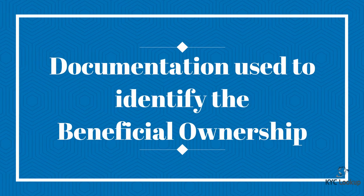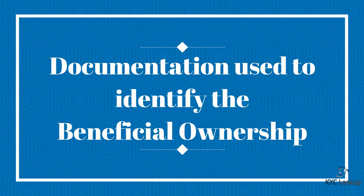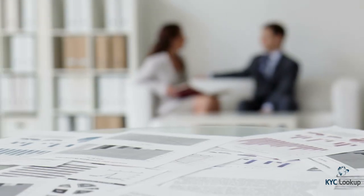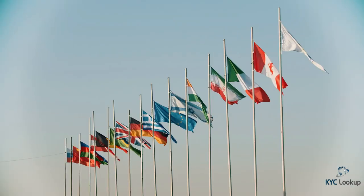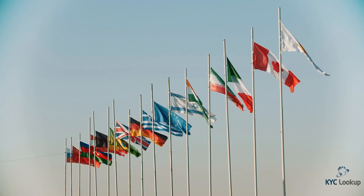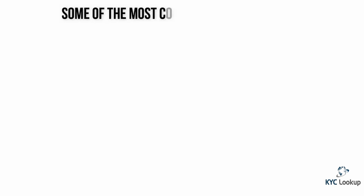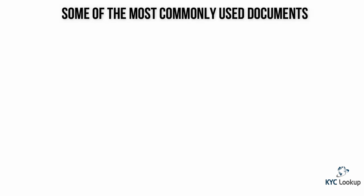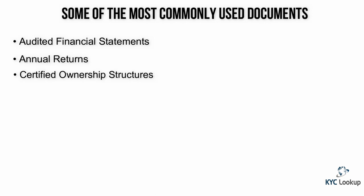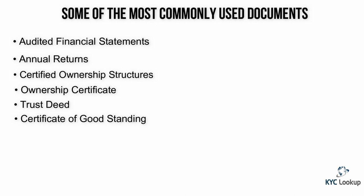Documentation used to identify the beneficial ownership. Acceptable documentation varies on the entity type as well as the country where the entity is being KYC'd. However, below we have listed some of the most commonly used documents: Audited Financial Statements, Annual Returns, Certified Ownership Structures, Ownership Certificate, Trust Deed, and Certificate of Good Standing.